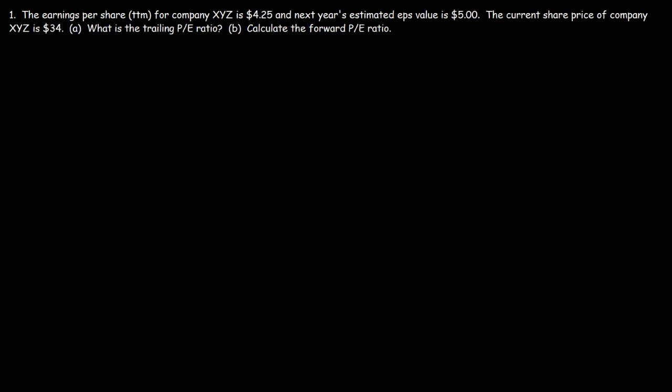In this video, we're going to talk about how to calculate the trailing P/E ratio and the forward P/E ratio. Let's start with this example problem. The earnings per share for company XYZ is $4.25, and next year's estimated EPS value is $5. The current share price of company XYZ is $34. What is the trailing P/E ratio?